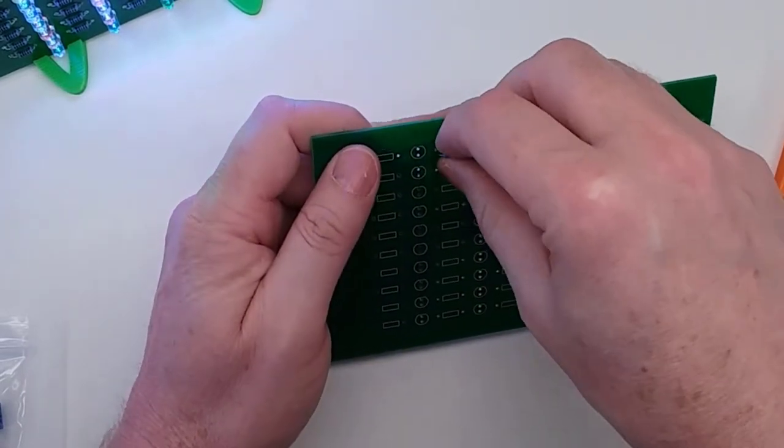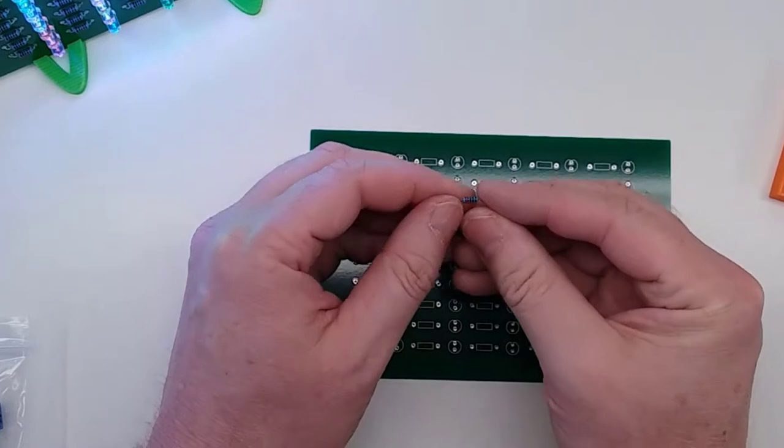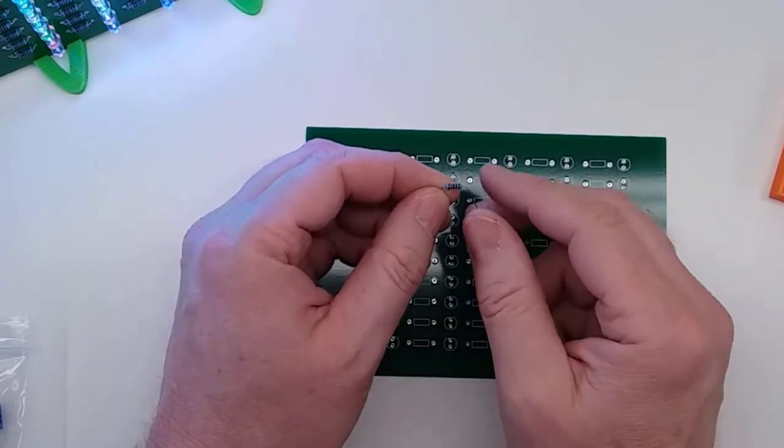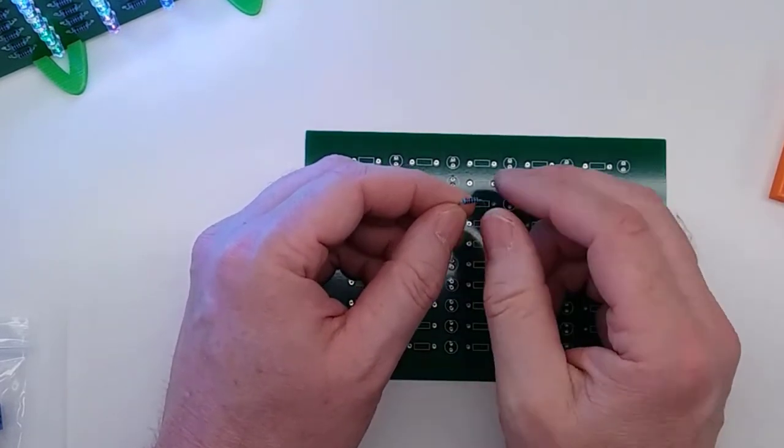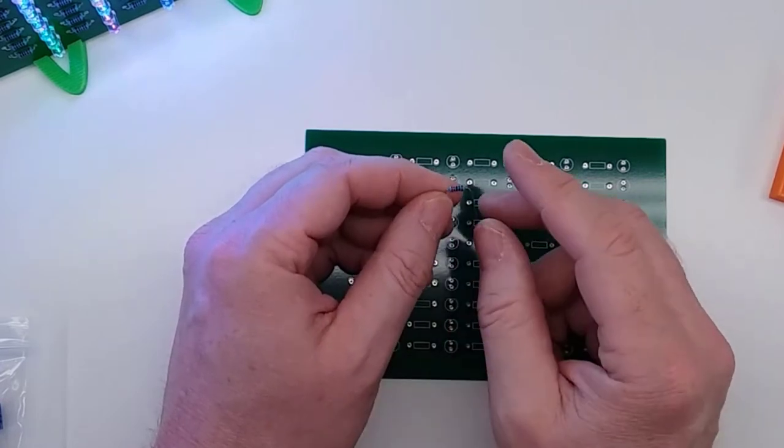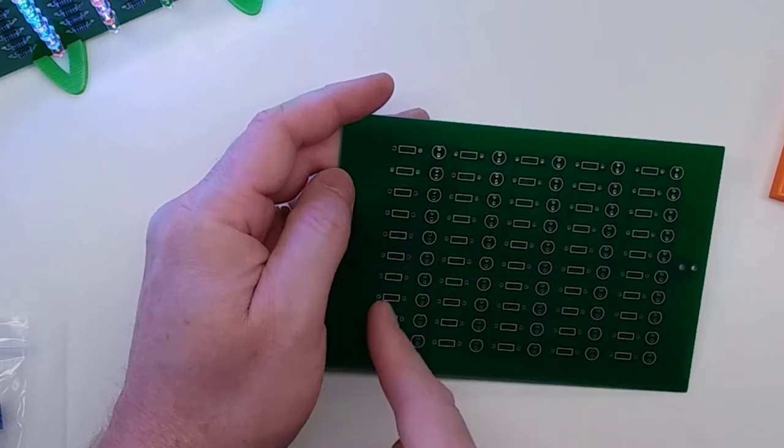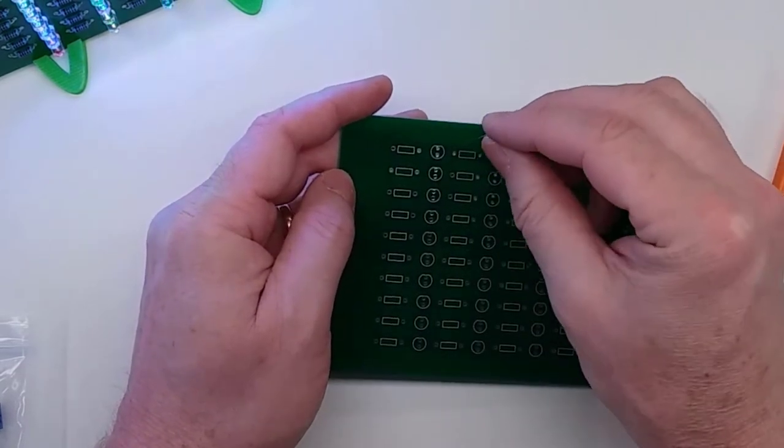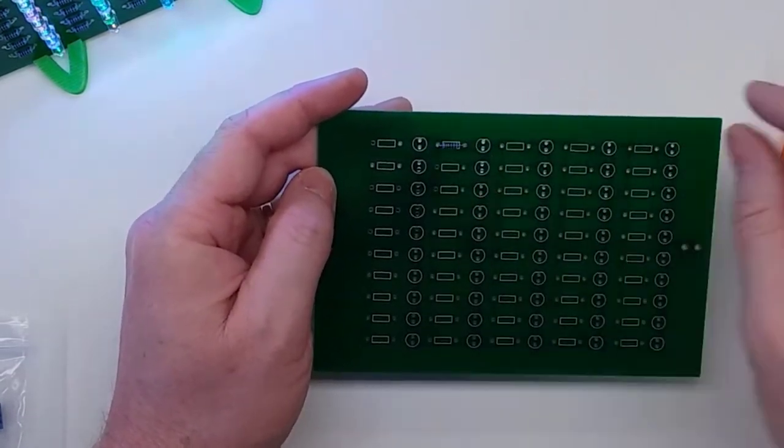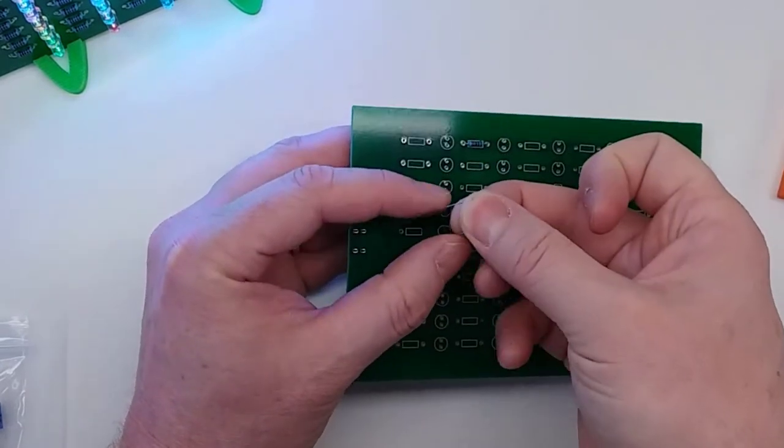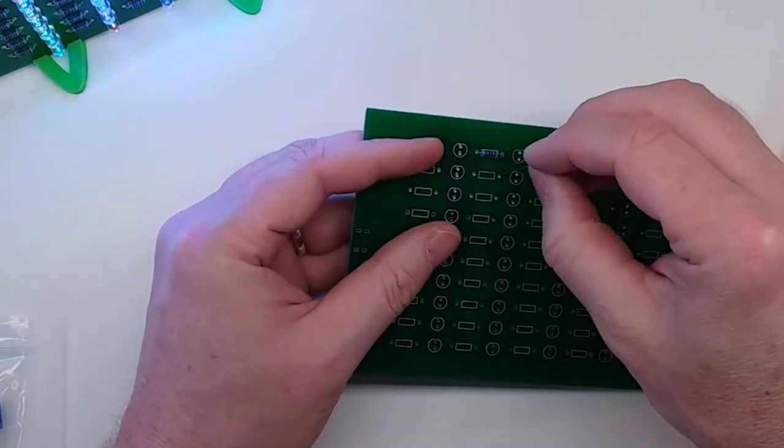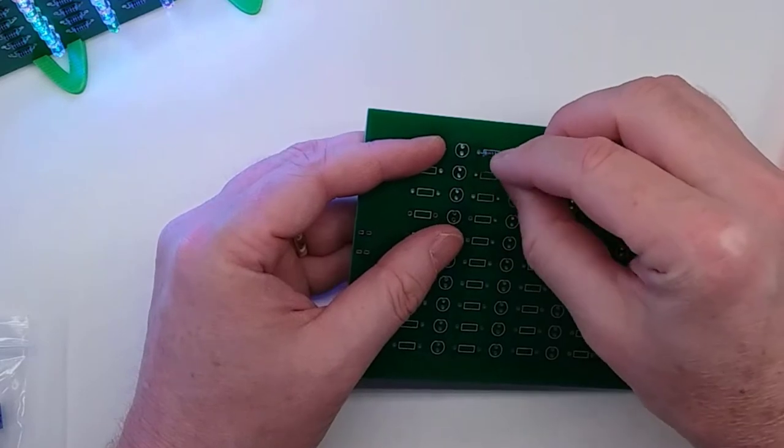For those that are getting the 220 ohm, the colors are going to be red red black black brown, and those with the 330 are going to be orange orange black black brown. Ideally what you would do is you would line up all of the reds on the left and the browns on the right. You can just put each one of these in and if you'd like you can either do them one at a time or you can put all of them in at once and then flip it over and solder it.